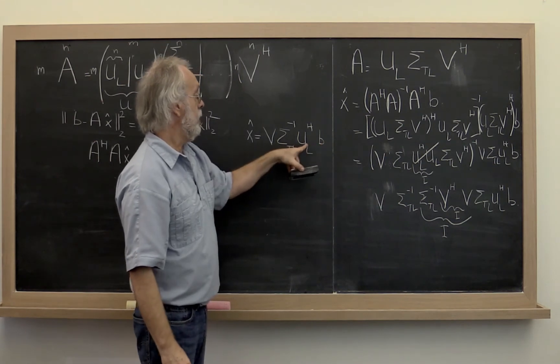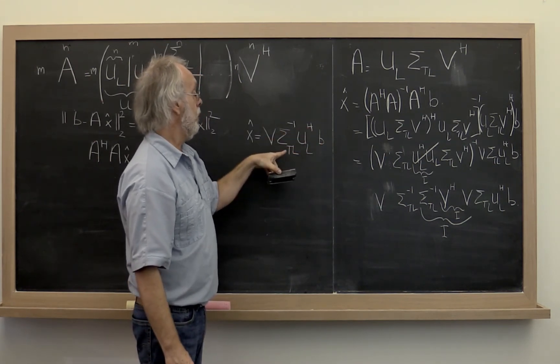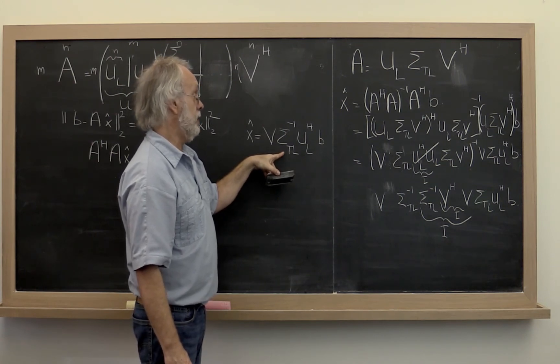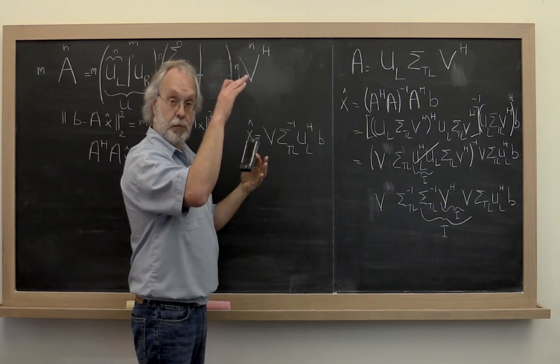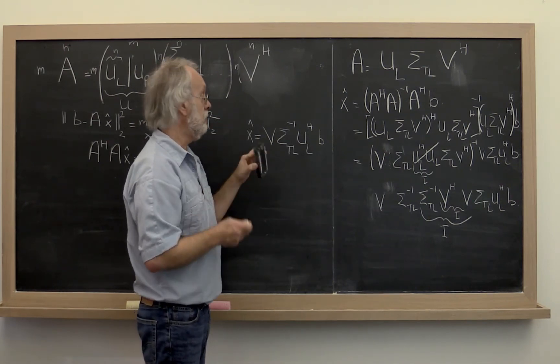So you would take your right-hand side, multiply it times the Hermitian transpose of UL, then multiply it by the inverse of the diagonal matrix. But that, of course, is just a matter of element-wise multiplying by the inverse of the corresponding diagonal elements.